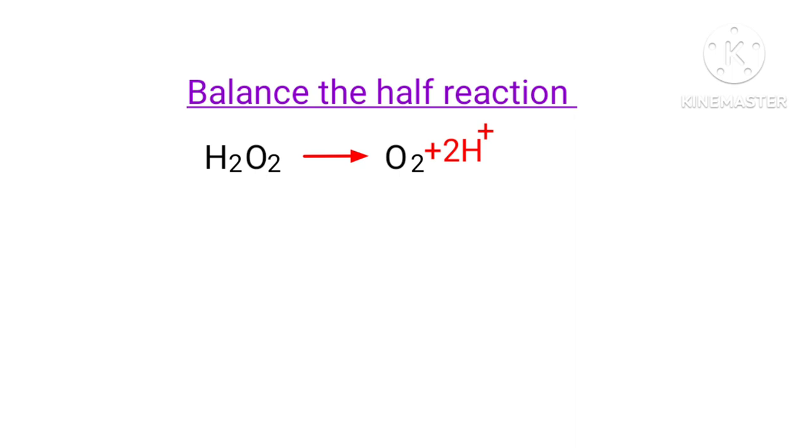For a redox reaction, the addition of charges should be equal on both sides. As per assigning oxidation number rule, the oxidation number of a neutral compound is equal to 0 and the oxidation number of a monoatomic ion is equal to the charge of the ion.